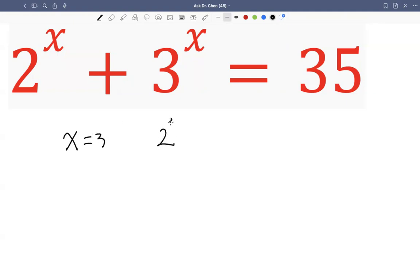Because 2 raised by 3 is 8, and 3 raised by 3 is 27, and 8 plus 27 indeed 35.